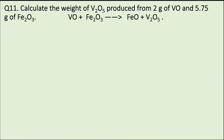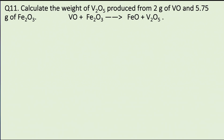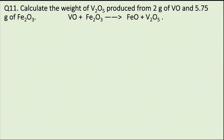Question 11. Calculate the weight of V2O5 produced from 2g of VO and 5.75g of Fe2O3. The equation is VO plus Fe2O3 forming FeO plus V2O5. Balancing the equation: 2VO, 3Fe2O3, 6FeO. Weight of VO is 2g and weight of Fe2O3 is 5.75g.